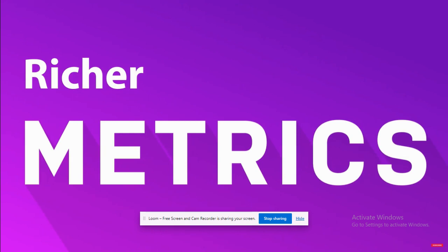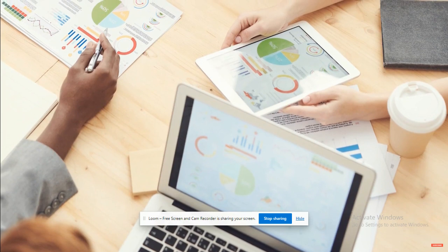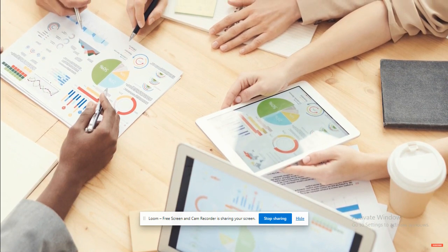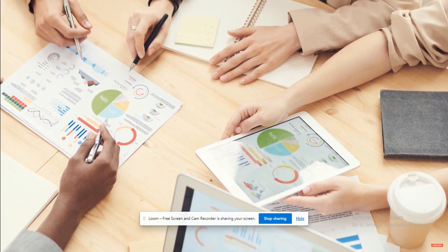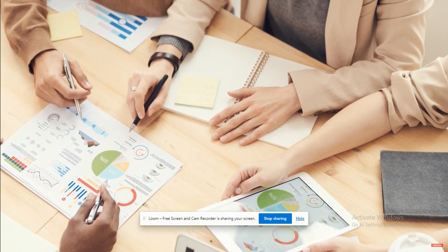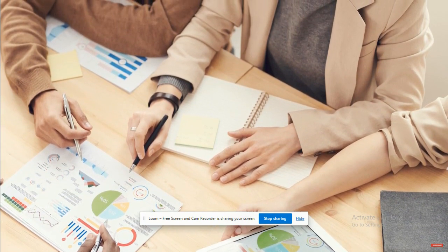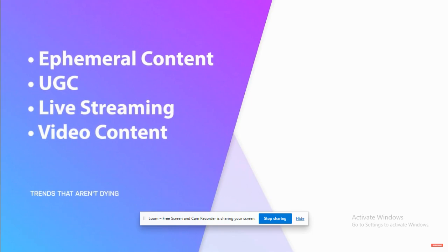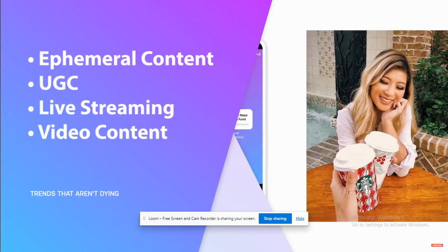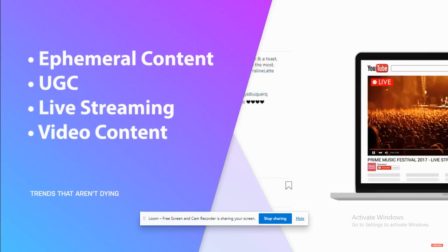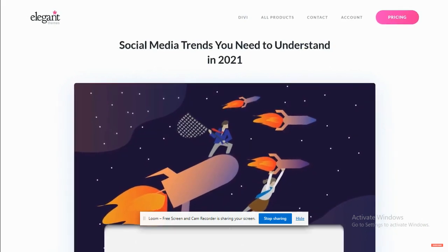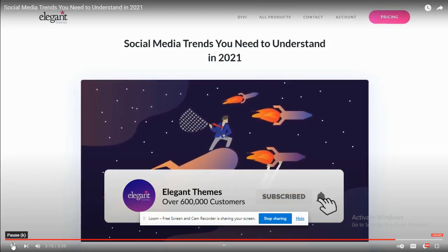Number seven: richer metrics. The metrics you used at the start may not be the same ones you care about now. Are you focusing on comments and direct interaction, or on users taking specific actions, or revenue from a campaign? Surface-level metrics aren't worthwhile anymore. In addition to new trends, don't overlook ongoing ones — ephemeral content like Instagram and Snapchat stories, user-generated content, live streaming on Facebook and YouTube, and short-form video like TikTok.